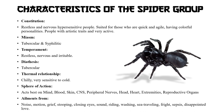Miasm: tubercular and syphilitic — spider group की medicines में syphilitic और tubercular miasm देखने को मिलता है। Temperament: restless, nervous, and quite irritable. Diathesis: tubercular diathesis — meaning persons who are very sensitive to cold, prone to catching cold, or those who have high chances of tubercular infection।